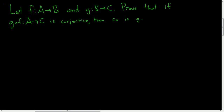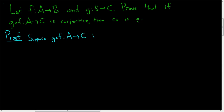We have two functions, f and g, and we have to prove that if g∘f is surjective, then so is g. Let's go ahead and do it. Proof. We'll start by supposing that g∘f, which maps A to C, is surjective.